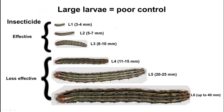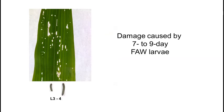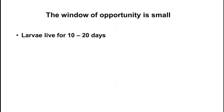Only larvae smaller than 10 millimetres are effectively controlled by means of an insecticide, and those are the larvae that cause the type of damage we do not easily see. This type of damage on a leaf was caused by L3 to L4 larvae, meaning they were 7 to 9 days old. If fields are not scouted regularly, this damage goes unnoticed and results in ineffective chemical control. The window for effective insecticide application is very small.